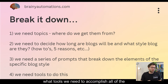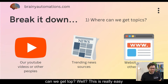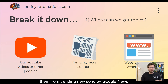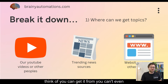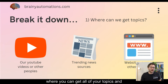Finally, we need to decide what tools we need to accomplish all of this. So where can we get topics? This is a really easy one — we can get them from YouTube videos, from our own videos or other people's videos. We can get them from trending news sources like Google News, BBC News, ITV News, or any news source you think of. You can even get them from other people's blogs or your own blogs. So you're basically spoiled for choice as to where you can get all your topics and trends from.